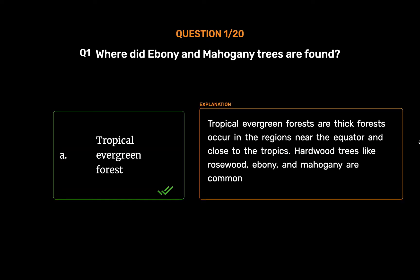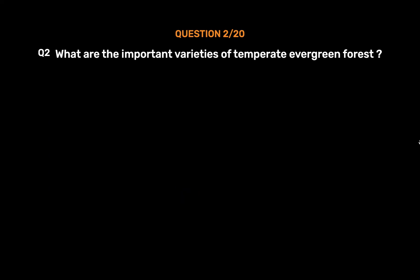Tropical evergreen forests are thick forests that occur in the regions near the equator and close to the tropics. Hardwood trees like rosewood, ebony, and mahogany are common.